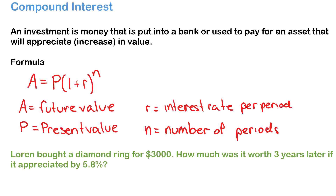There is a formula for this: A equals P bracket one plus r to the power of n. A is your future value, P is your present value or principal, r is your interest rate per period — so if you're compounding monthly your interest rate has to be monthly — and n is your number of periods, so if you're compounding monthly, n should be in months, not years.